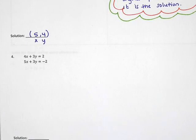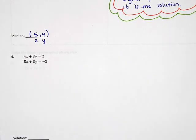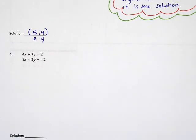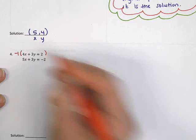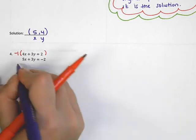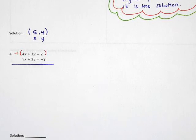Let's try one last example. In example 4, we need to use elimination. All of the equations are lined up — x's on top of x's, y's on top of y's, equals on top of equals, numbers on top of numbers. Now, do any of the variables cancel? I see that the 3's are really close to canceling — if one of those was negative, this would be perfect. So to make one of those negative, we can multiply by negative 1 to the entire first equation, and it will turn that number into a negative.